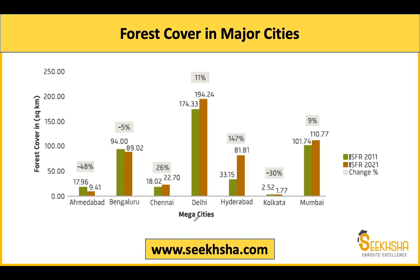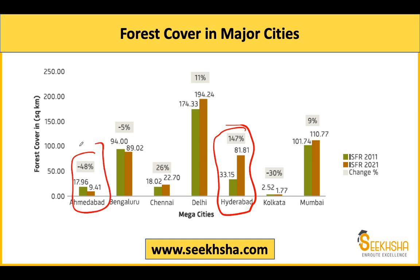Forest cover mein percentage change bhi dikhaya gaya hai - decadal change. 10 saal ke andar jo change aaya hai: sabse zyada forest gain jis city ne kiya hai - in saat cities mein - woh Hyderabad ne kiya hai. Hyderabad ne 147 percent forest gain kiya hai 10 saal ke andar. Similarly, sabse zyada forest loss Ahmedabad ke andar hua hai, jahan par 48 percent ka forest loss hua hai 10 saal ke andar. Direct question puchha ja sakta hai - kis city mein sabse zyada gain hua: Hyderabad; sabse zyada loss: Ahmedabad.